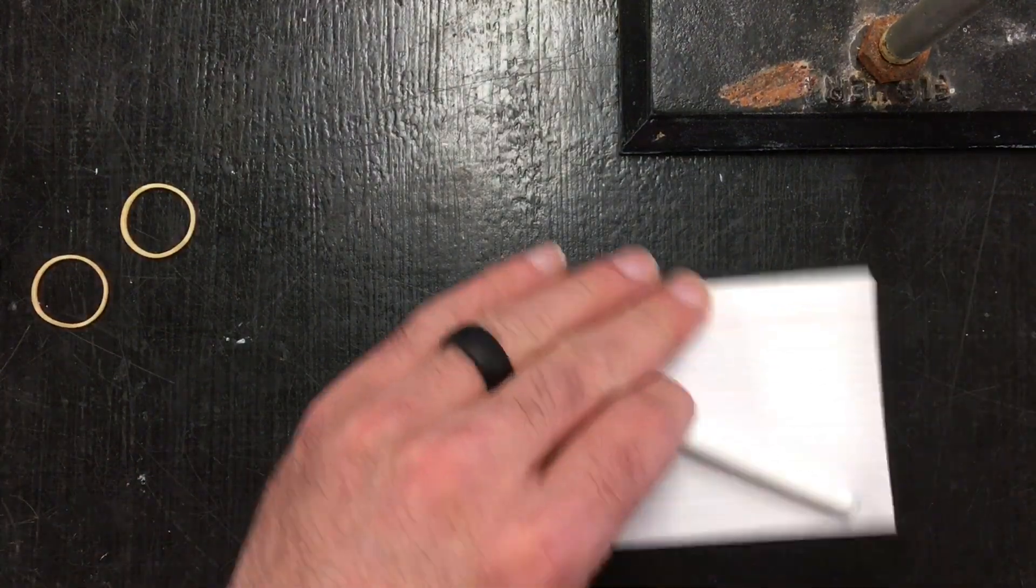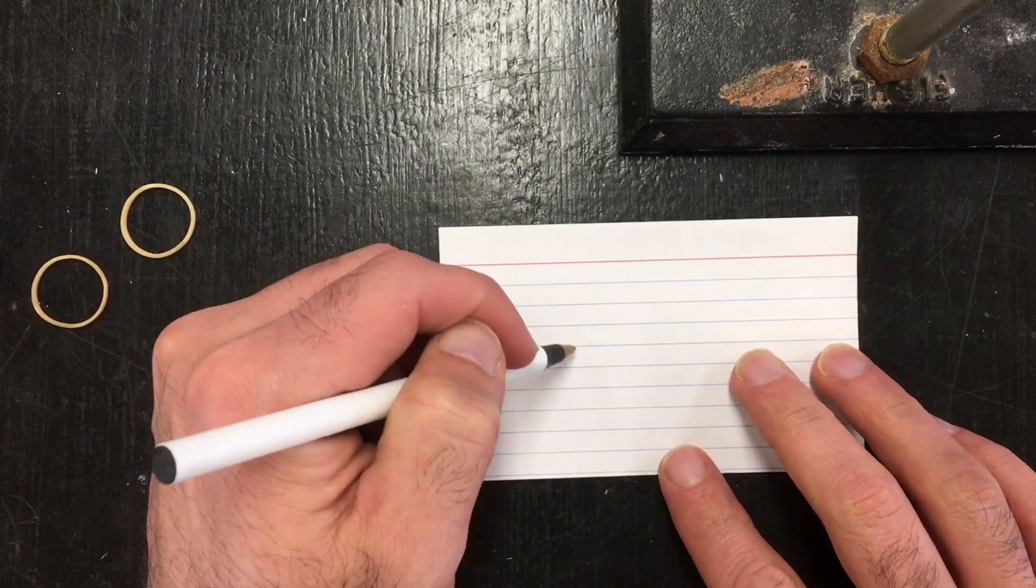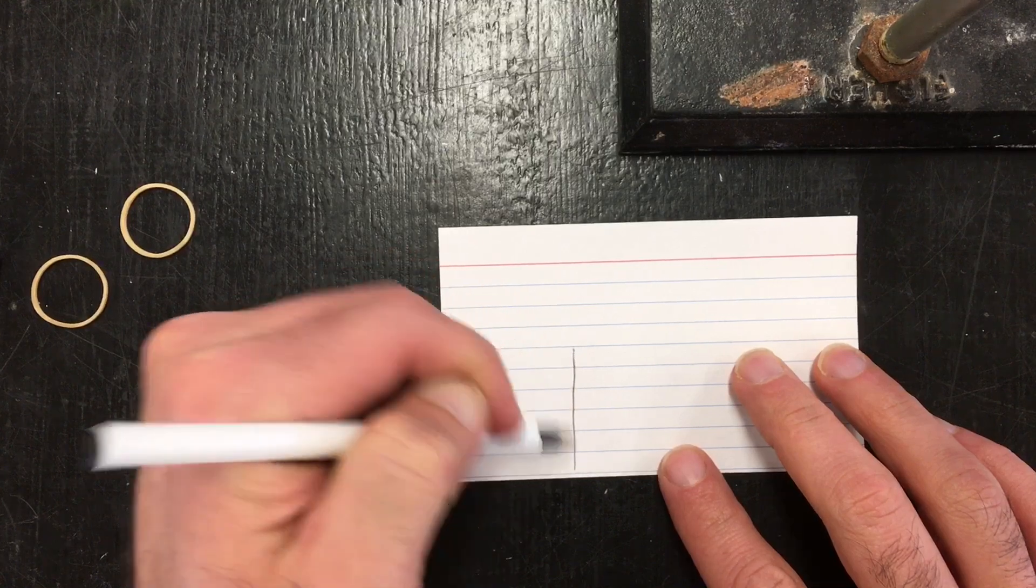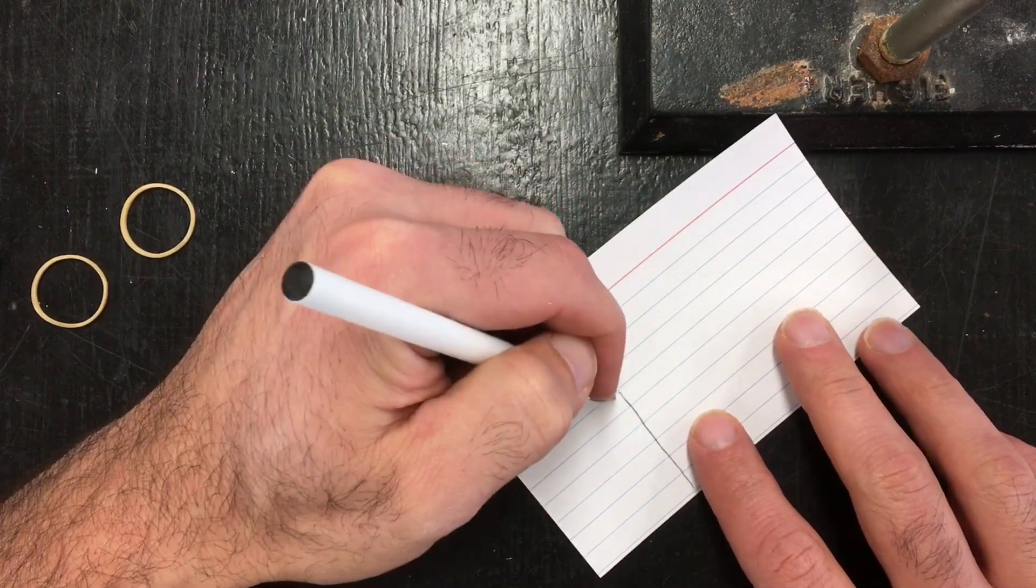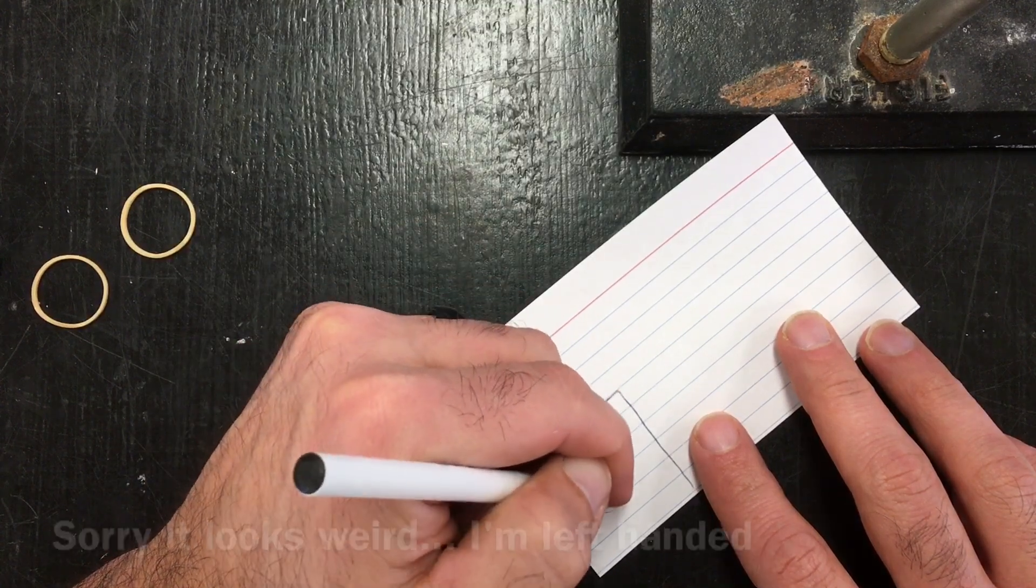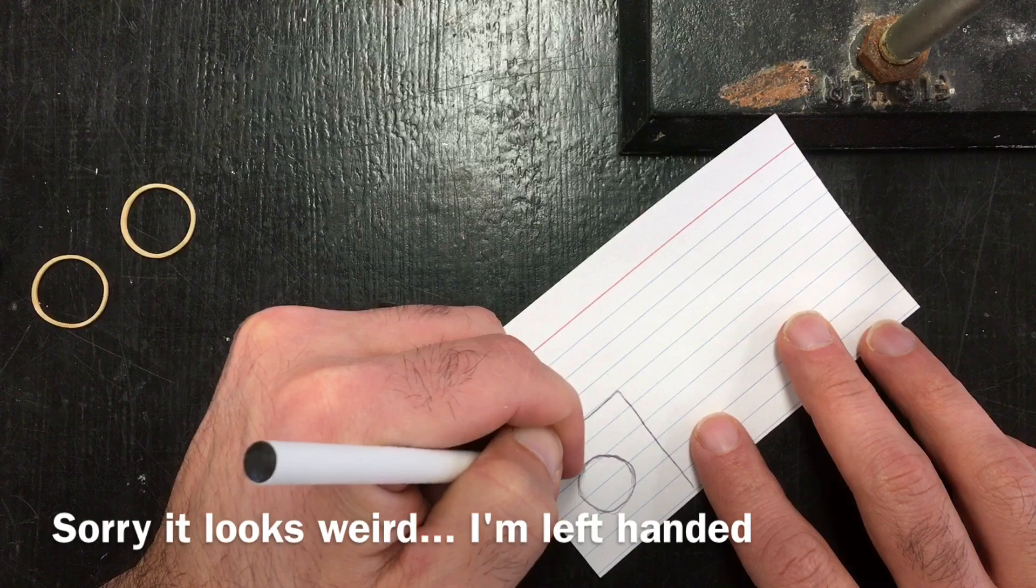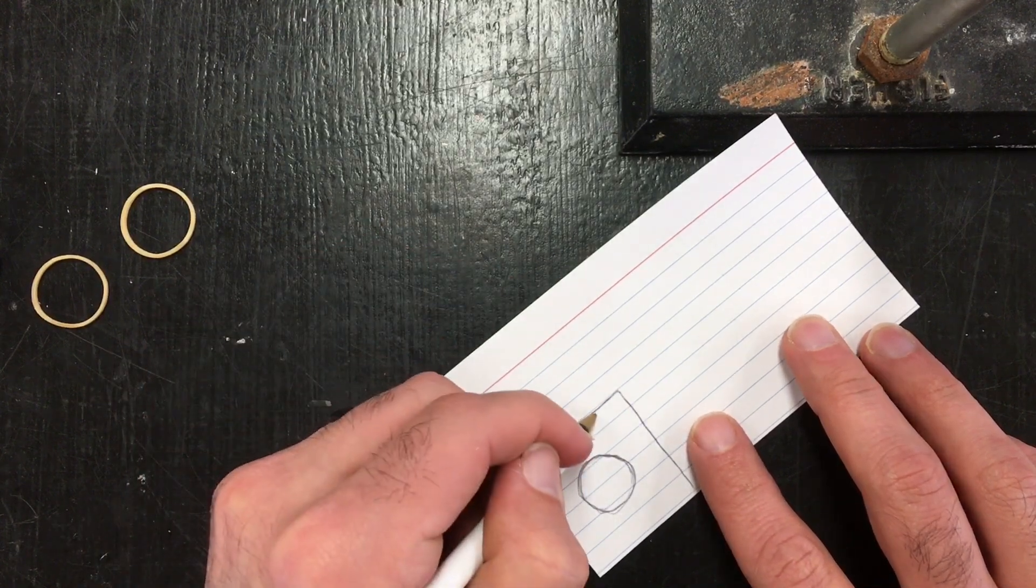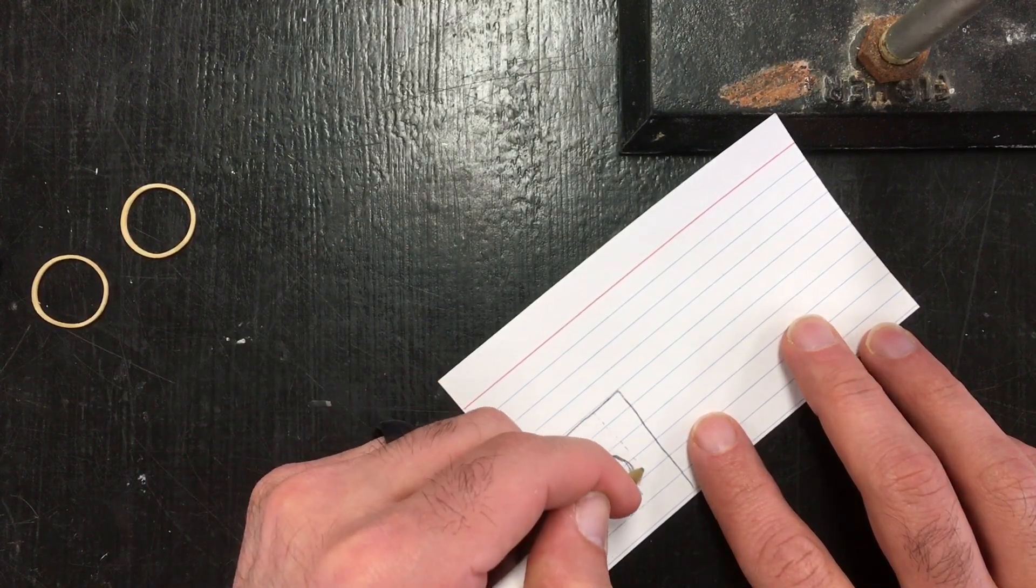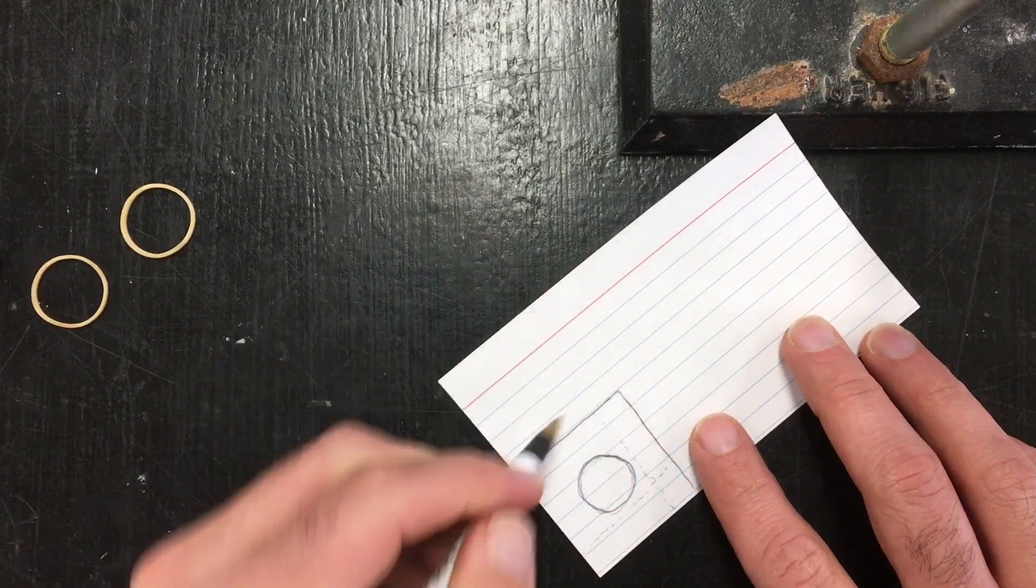So to make the basket, usually what I do is take an index card. Basically, you can imagine you want the marble, or whatever it is that you're throwing, to be able to fit pretty snug in the middle. Too much space and the marble will roll around, so I want to have the walls of my box to be right about where the marble would be.